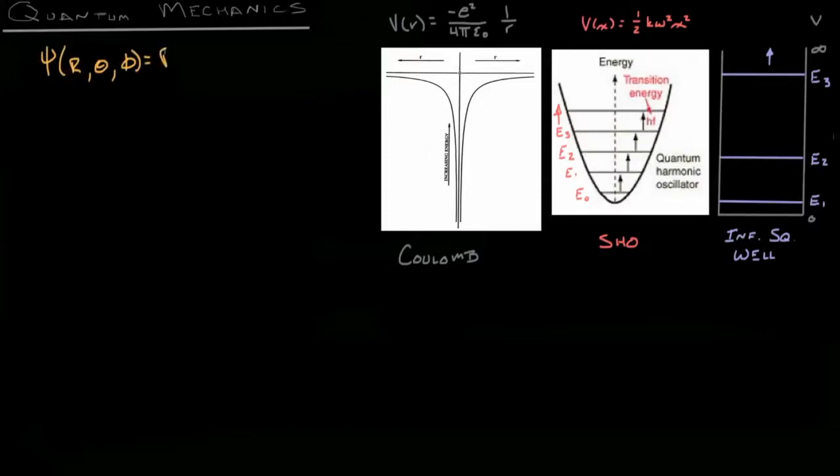To start off, we're going to go all the way back to our separation of variables discussion. And what we decided was that we could separate the wave function, which is a function of r, theta, and phi, into basically two functions: one is a radial function, the other is an angular function.